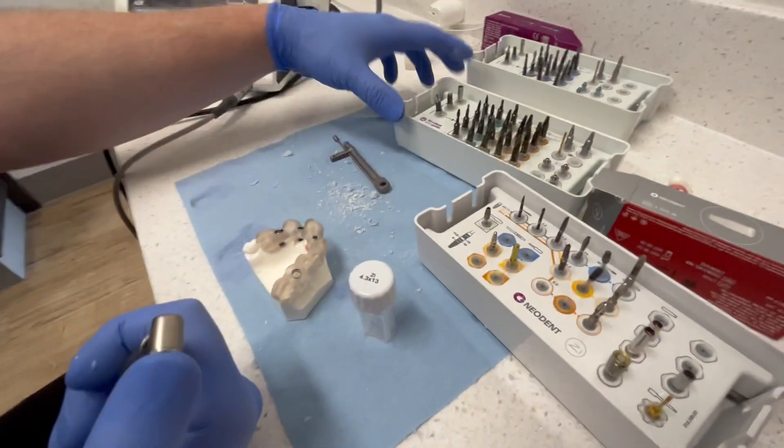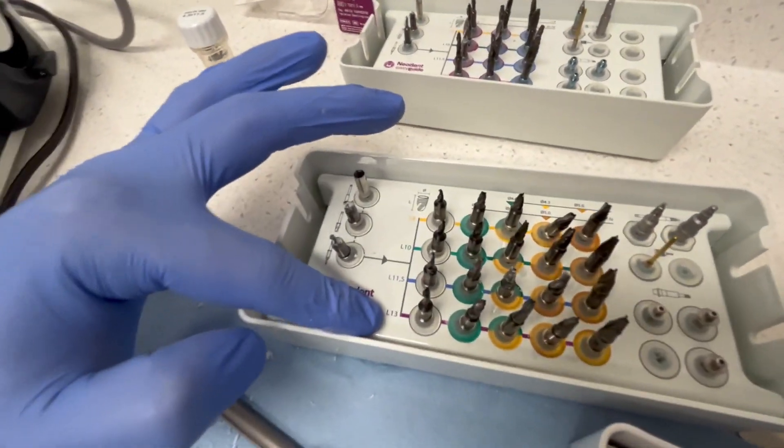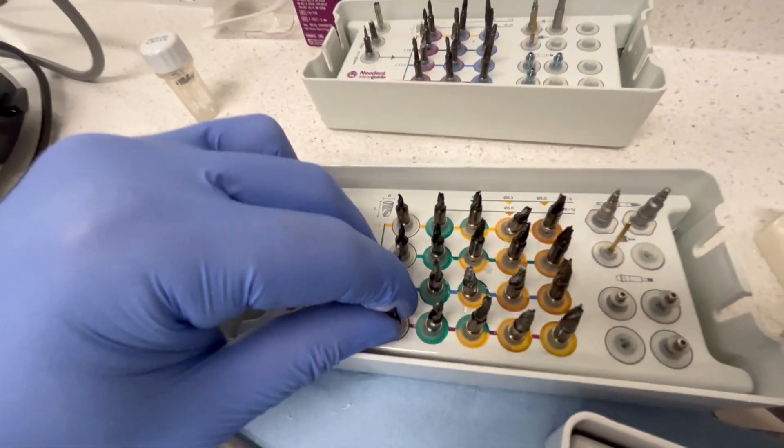In this case, we're doing a 4-3-13. So we're going to go down to the 13-millimeter row. And we're just going to follow this workflow.